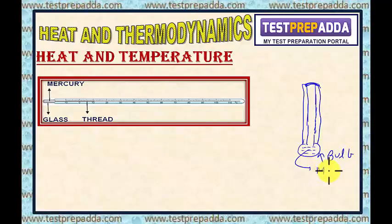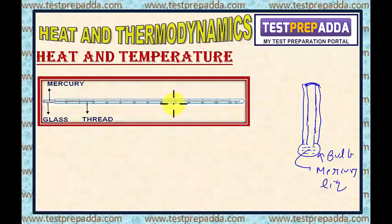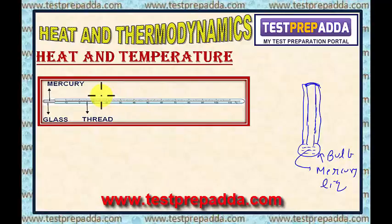As temperature increases, the liquid mercury expands, and the length of the mercury column changes with temperature. Each column length represents a particular temperature. To assign a numerical value to each length, two fixed reference points are taken.